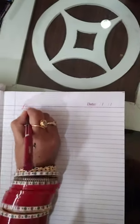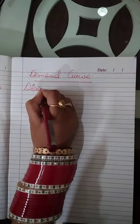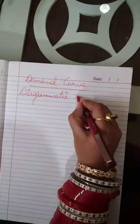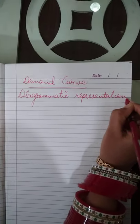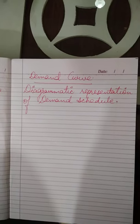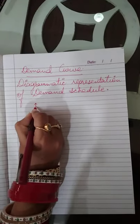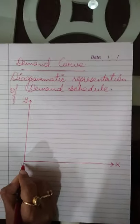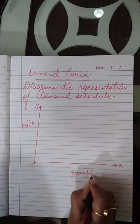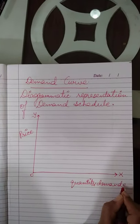इसके बाद आता है demand curve। Demand curve means diagrammatic या graphical representation of demand schedule। Curve related to diagram only — तो demand schedule को हम diagram की form में present करते हैं। This is your Y-axis, this is your X-axis; on the Y-axis we take price and on the X-axis we take quantity demanded।